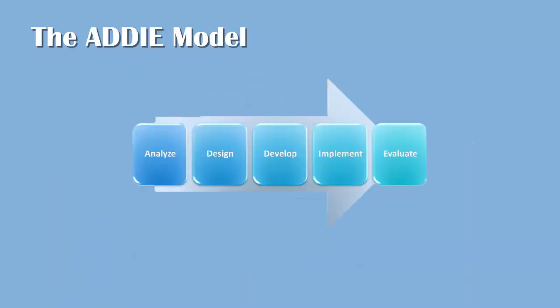So there you have it, the five phases of the ADDIE model of instructional design. Remember there are five phases: analysis, design, development, implementation, and evaluation.